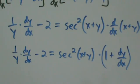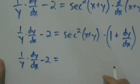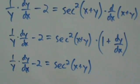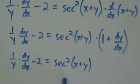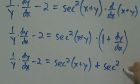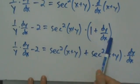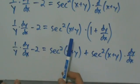So now we can simplify a little more. The left side stays the same: 1 over y times dy/dx minus 2. What I want to do is distribute secant squared of x plus y through these parentheses. So secant squared of x plus y times 1 gives us secant squared of x plus y, and then plus secant squared of x plus y times dy/dx. We have to distribute in order for step two to work — getting all the dy/dx terms on one side and everything else on the other.